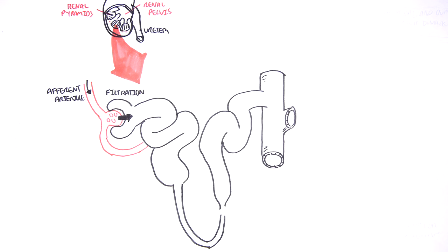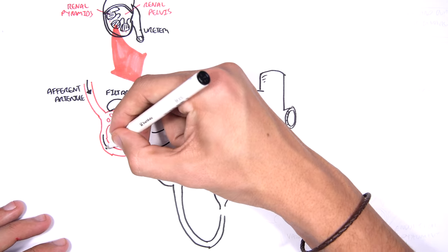When the blood is being filtered, filtrate is produced. And this is what will go through the nephron. The remaining blood will leave the glomerulus and exit out through the efferent arteriole.